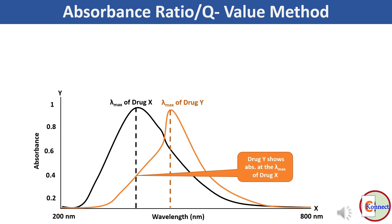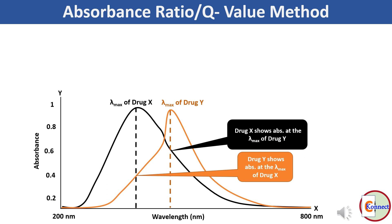Similarly, drug X absorbs some radiation at lambda max of drug Y and both of the spectra show an isoabsorptive point, meaning that at a particular wavelength both of the drugs show similar absorbance.